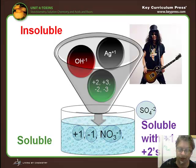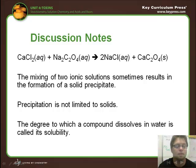Now if you look at a chemical reaction here, you can see a balanced chemical reaction: CaCl2 + Na2C2O4 making NaCl and CaC2O4. When you mix two ionic solutions, this sometimes results in the formation of a precipitate. Again, it's got to be the right attraction to form that solid. The degree to which a compound dissolves in water is called its solubility.